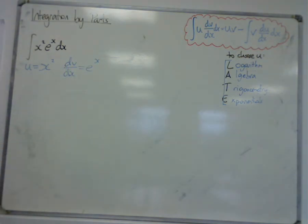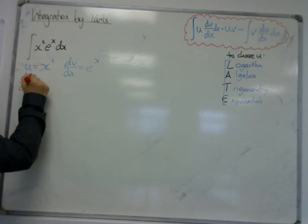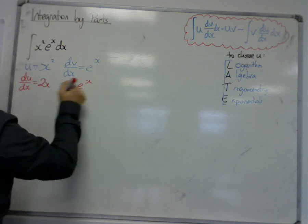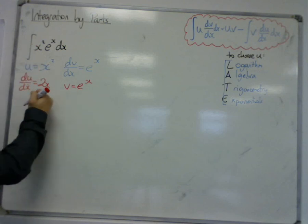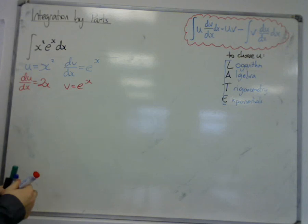So we're going to have to find du by dx, so du by dx is equal to 2x, and v is equal to e to the x, so that's differentiating the x squared to 2x, and integrating the e to the x to e to the x.